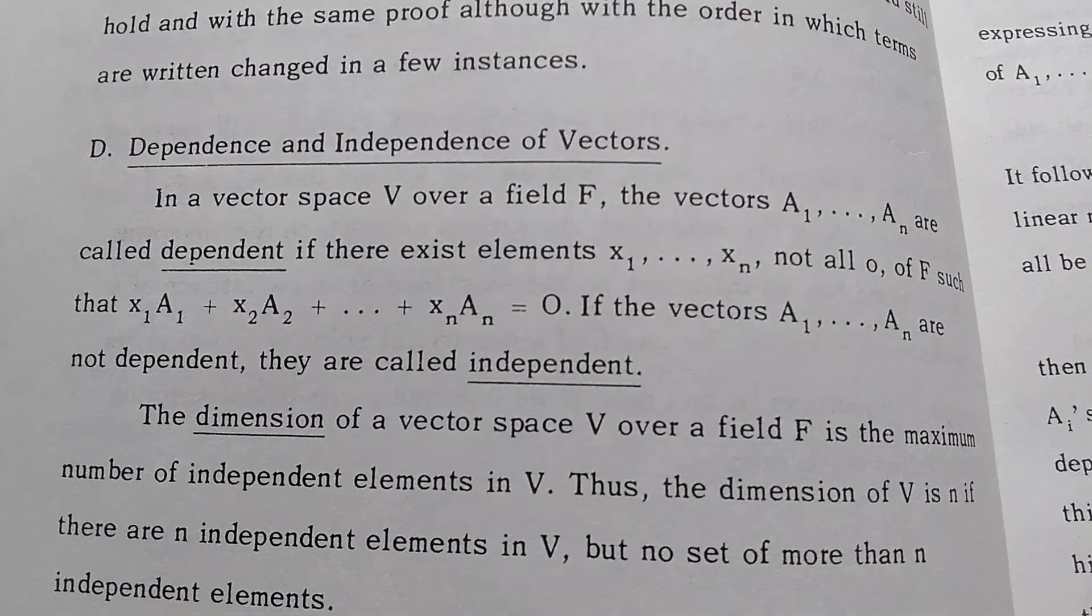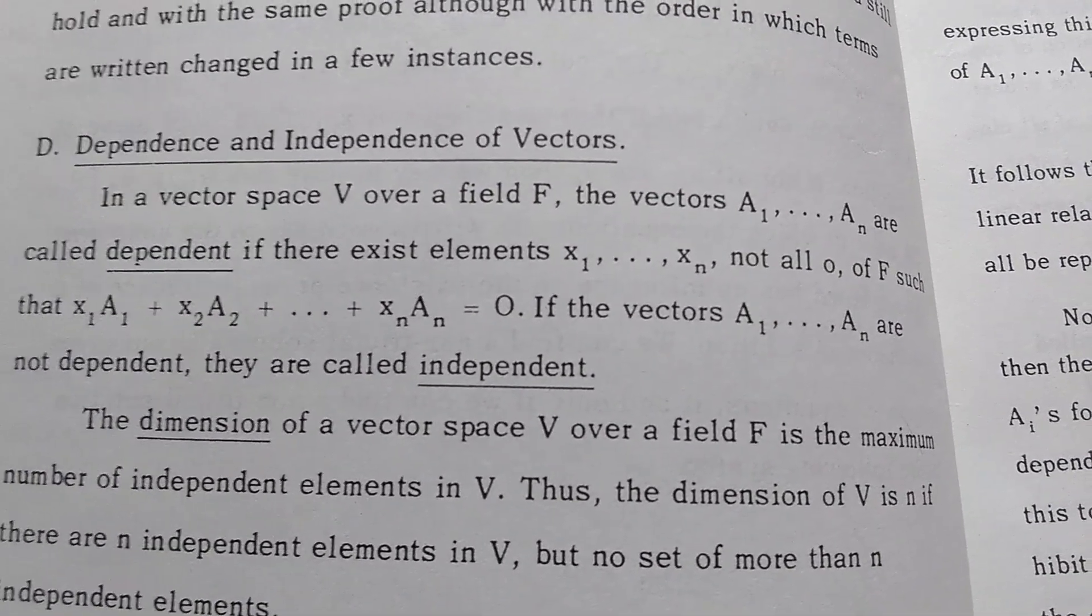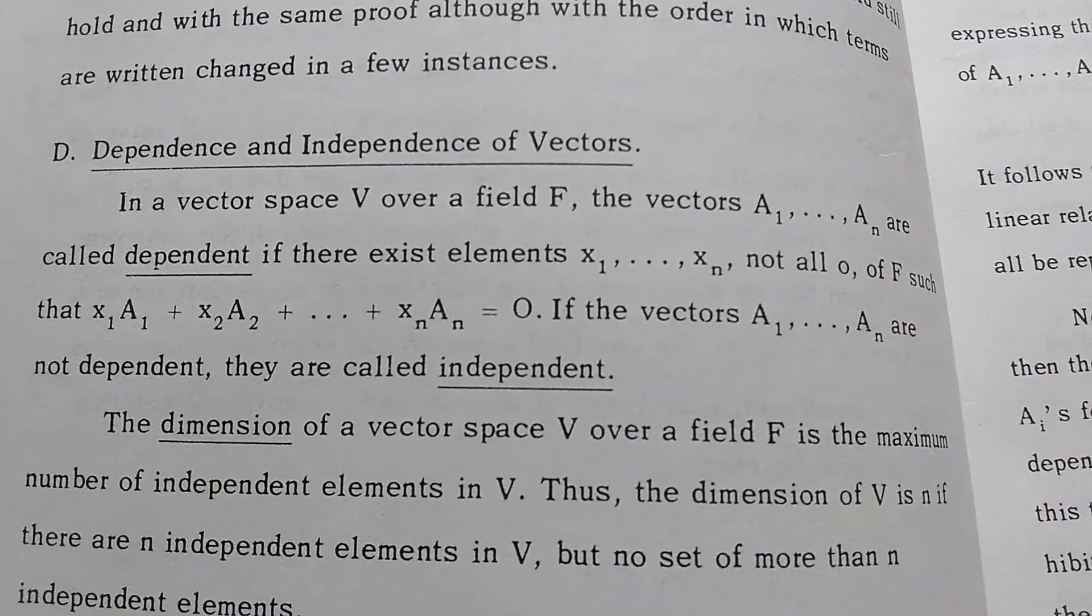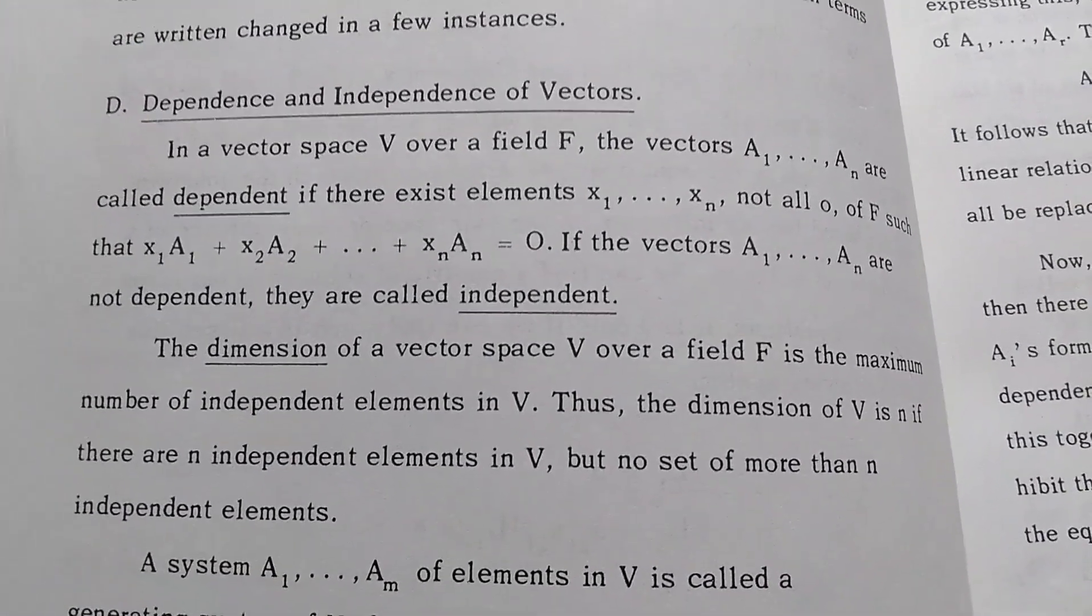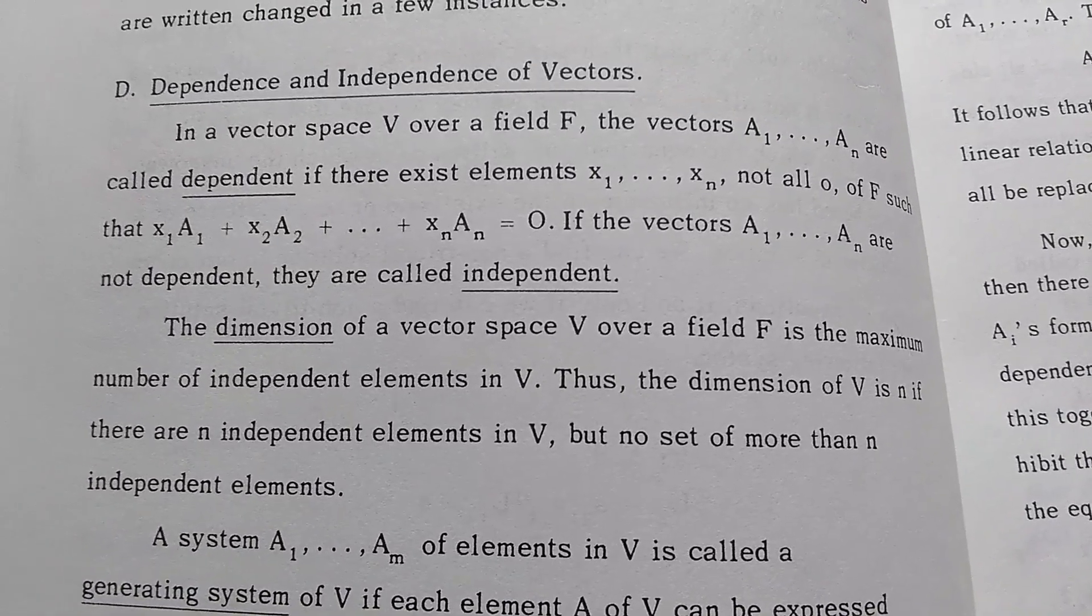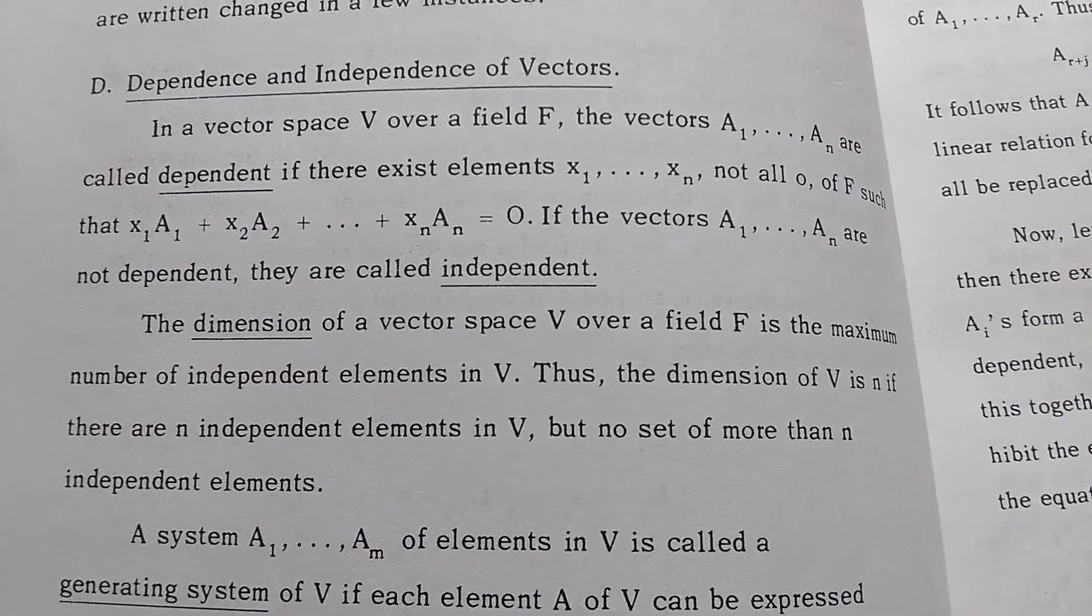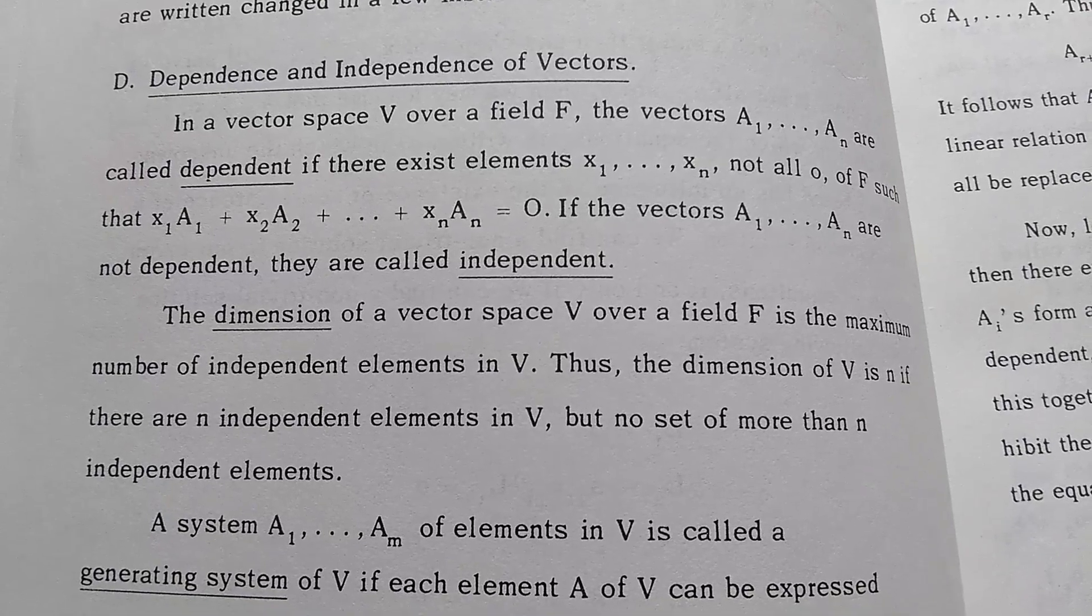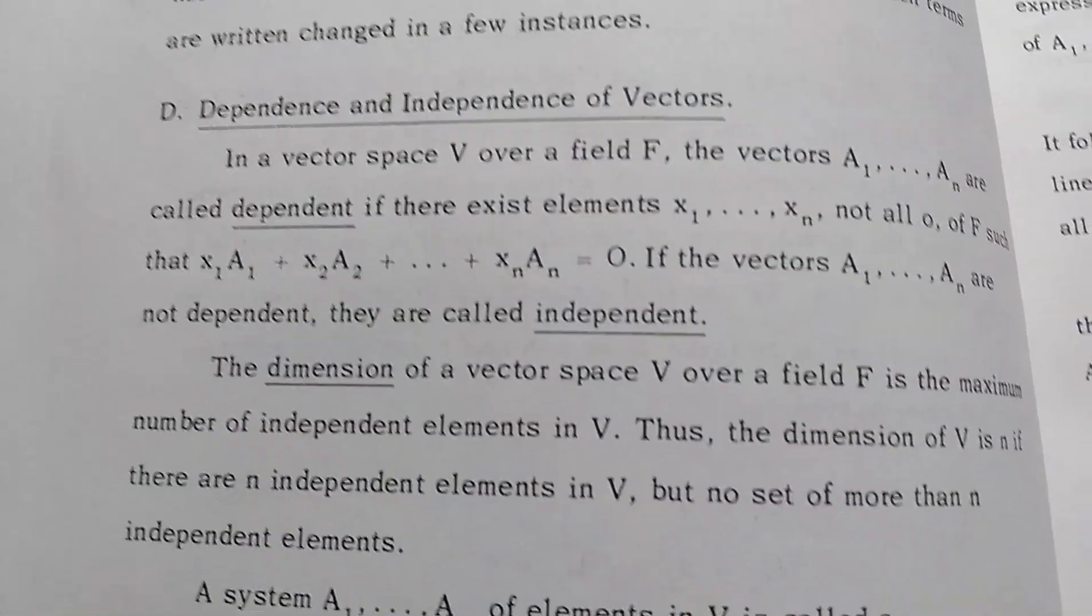If the vectors are not dependent, they are called independent. Then immediately he defines dimension: the dimension of a vector space V over a field F is the maximum number of independent elements of V. Boom, done. The dimension has been defined on page 4.